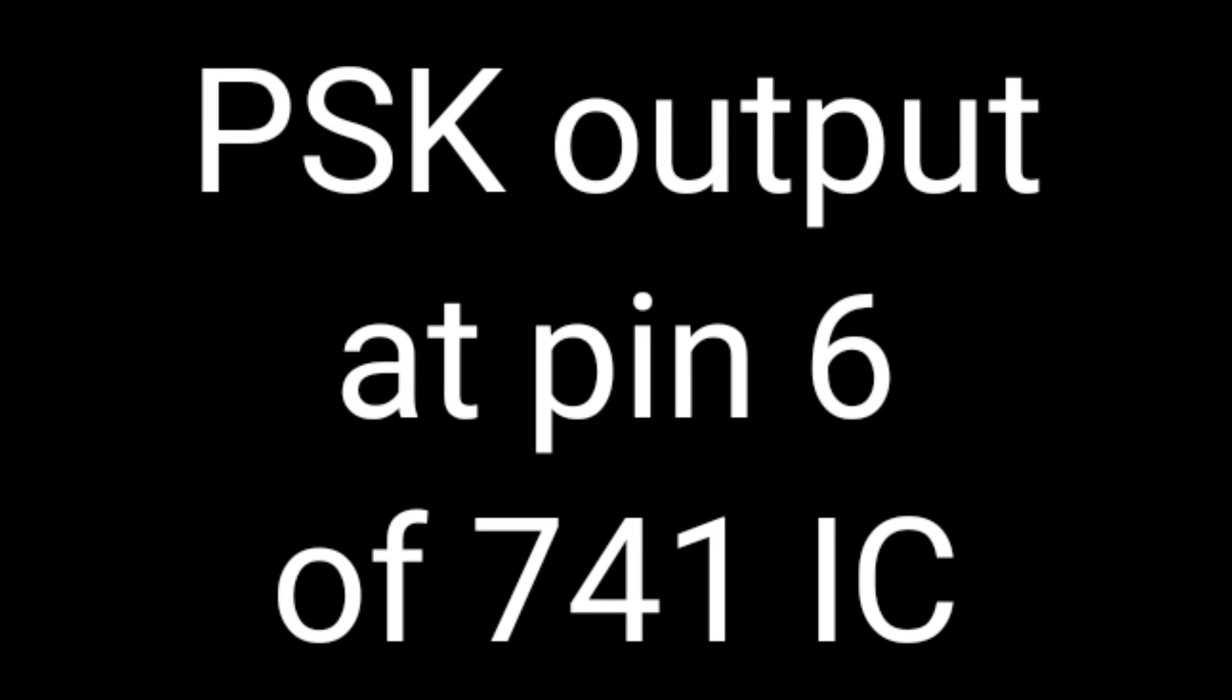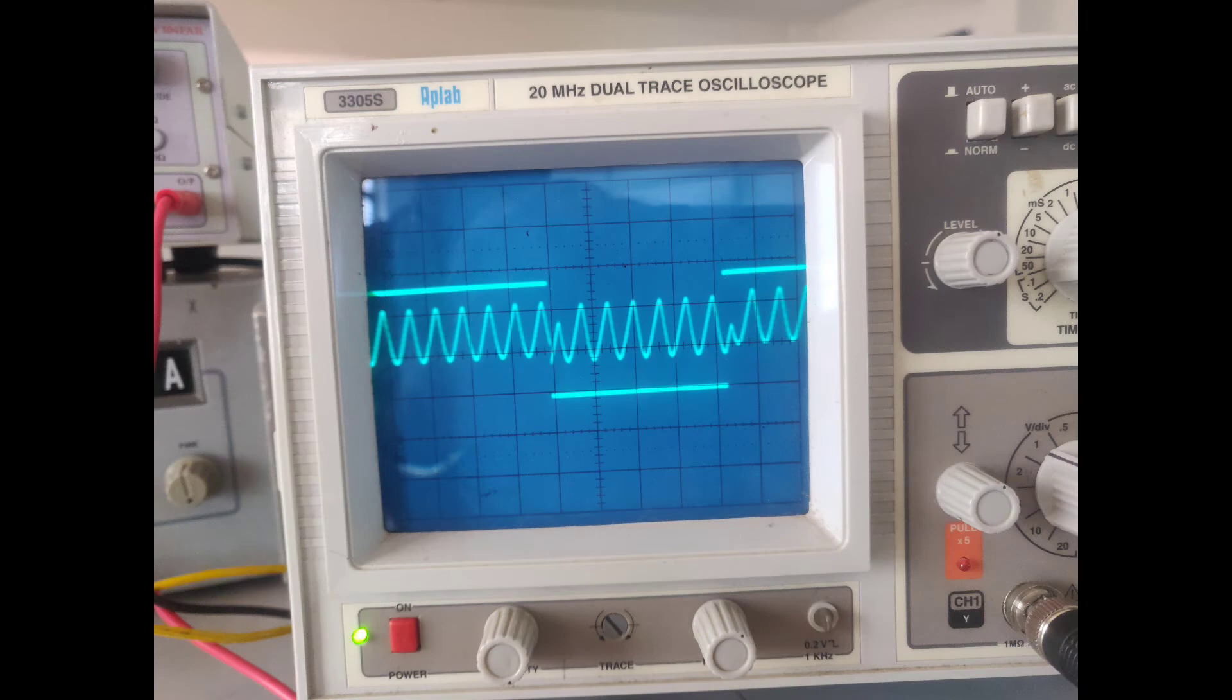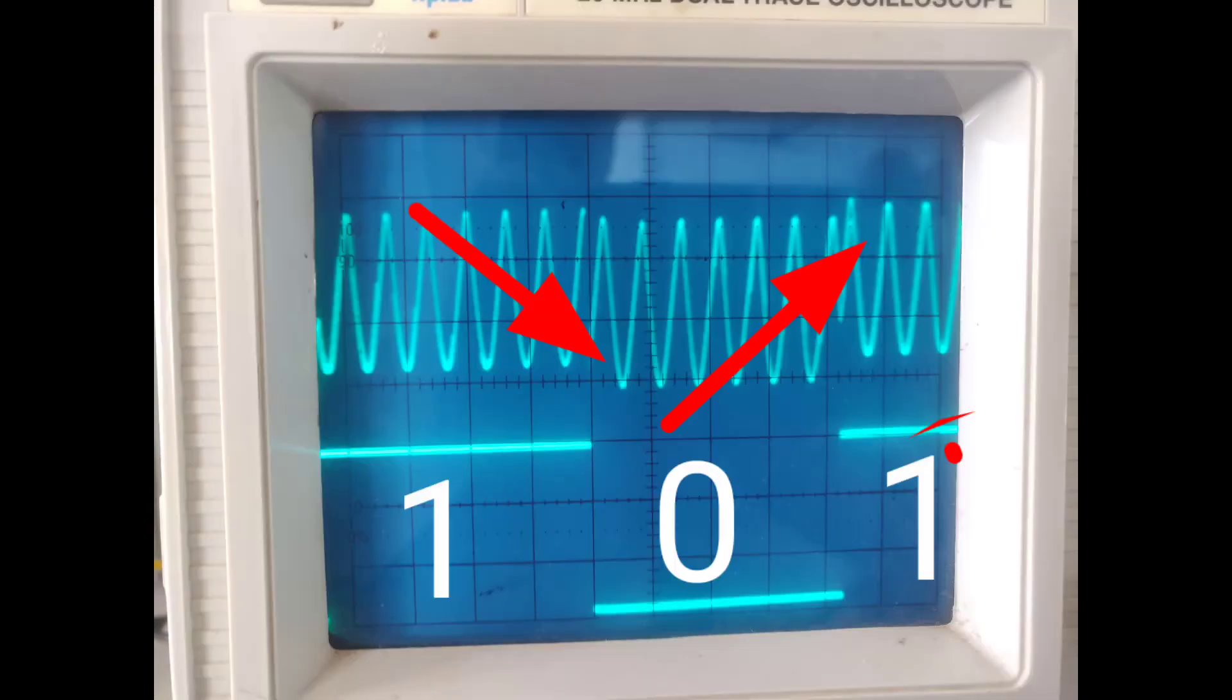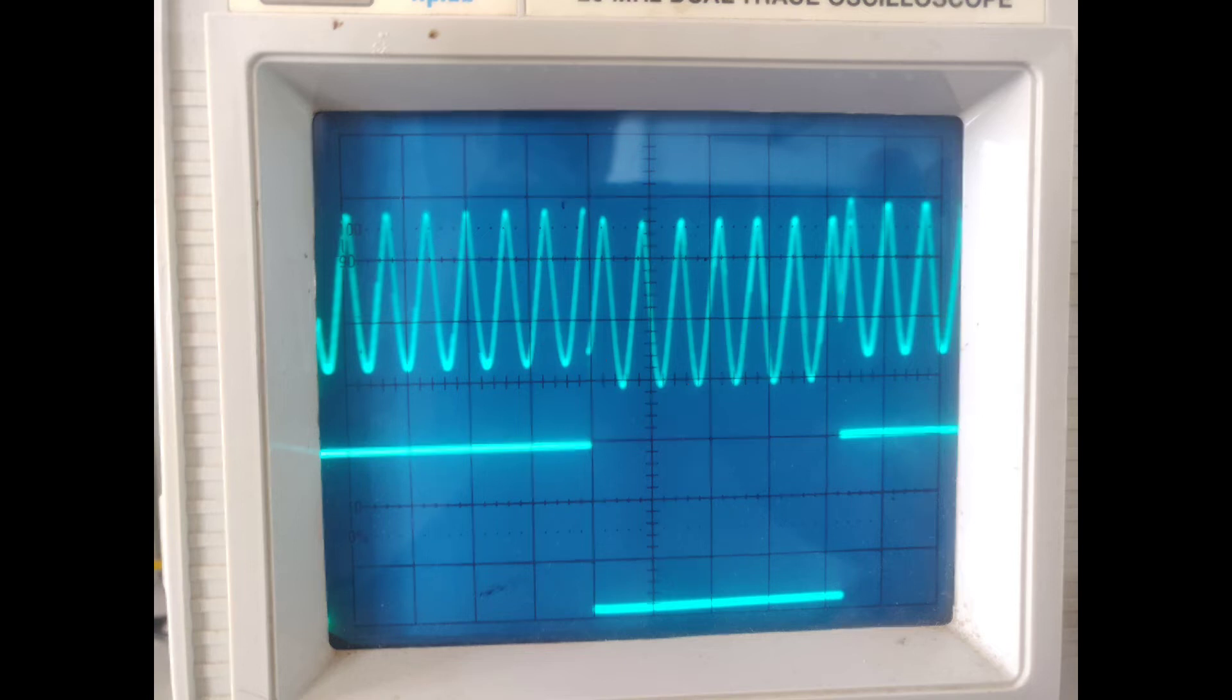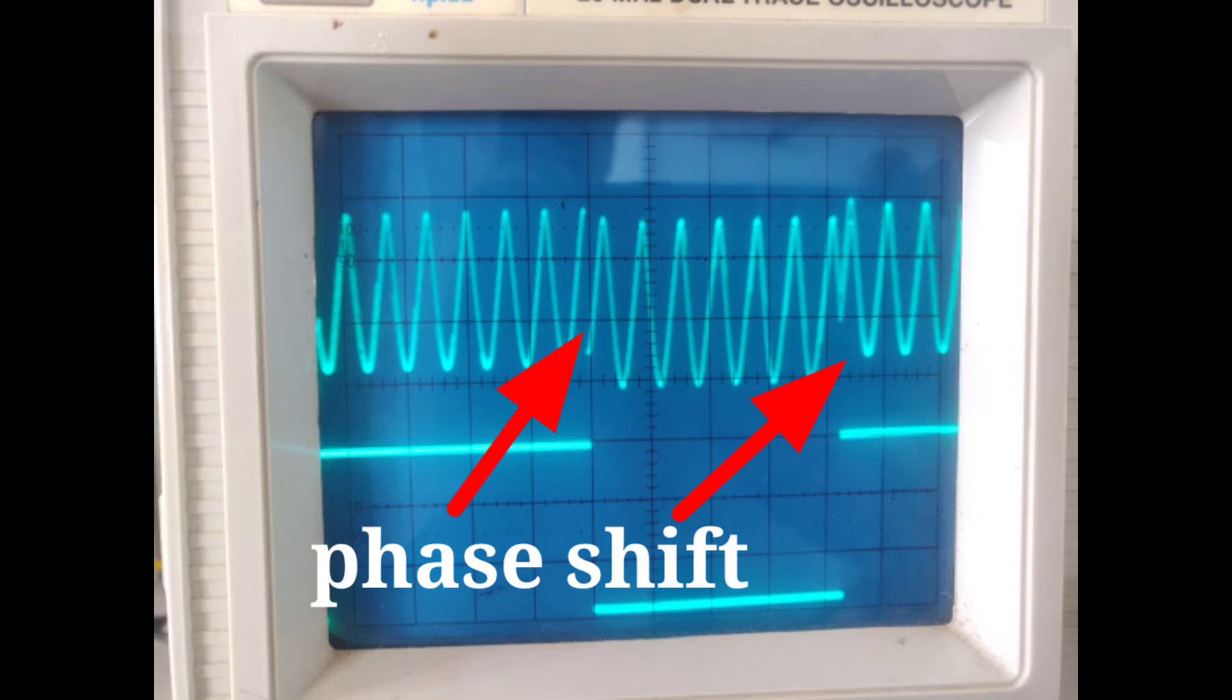Now, check the output at pin number 6 of 741. And this is the output. You can see that the two waveforms are compared, where the transition will take place from 1 to 0. There is a phase reversal. It is clearly mentioned here. See the phase shift.